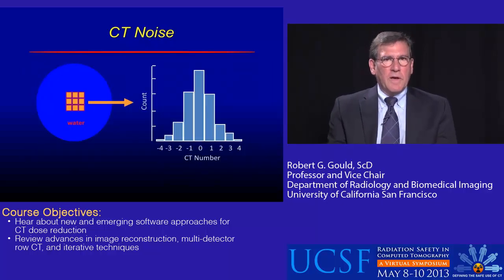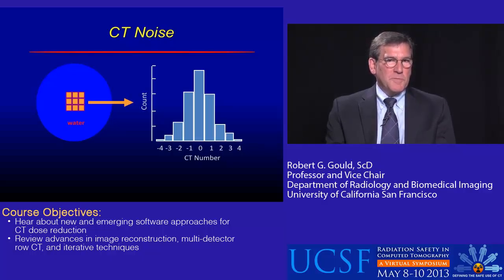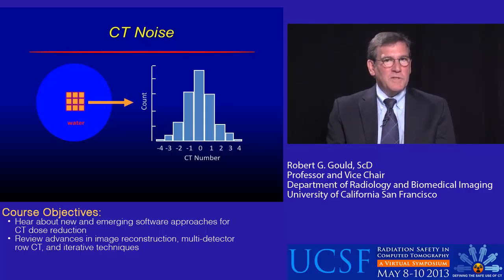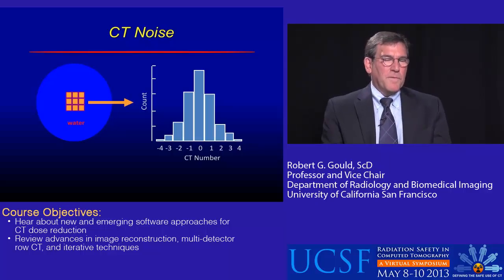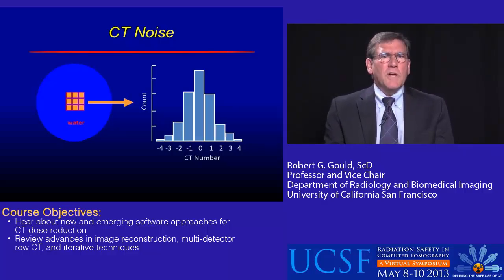For example, in characterizing CT noise, consider a water bath that we're imaging. If we looked at the center of this phantom, what we would expect is all of the CT numbers to be represented by 0, which is by definition the CT number of water. But in fact, we see a distribution, and the standard deviation of that distribution can be used to characterize noise.